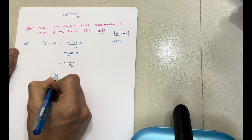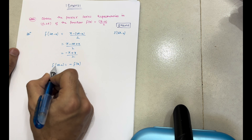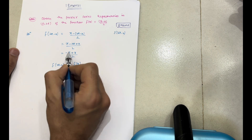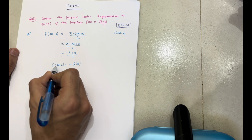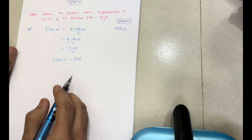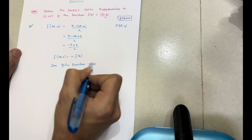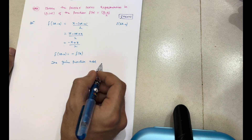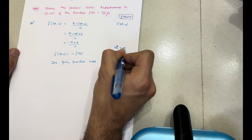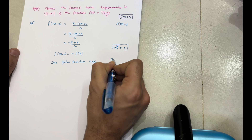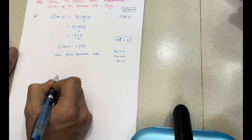Therefore f(2π - x) = -f(x), so the given function is odd. In even functions, the Fourier coefficient bn = 0. And once we get an odd function, the Fourier coefficients a0 = 0 and an = 0. For this odd function we have to calculate bn only, which makes things easier.